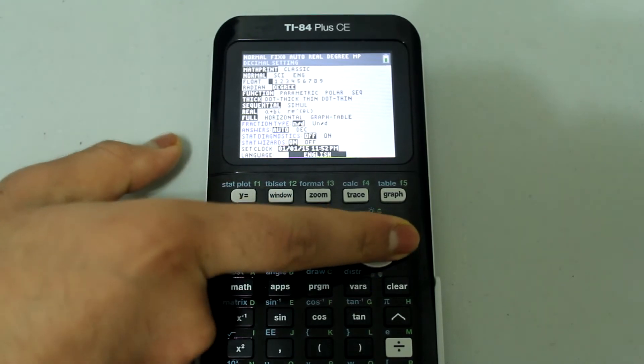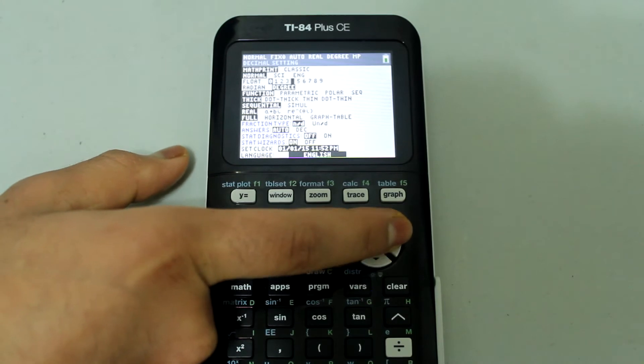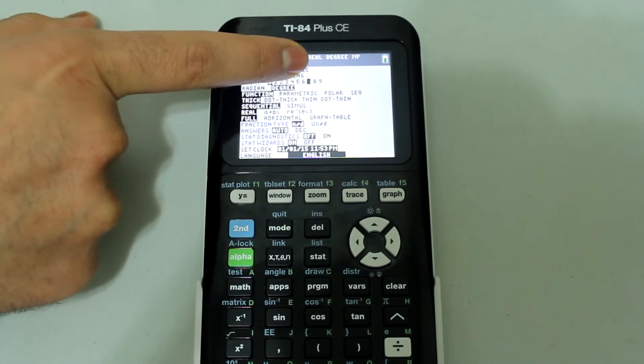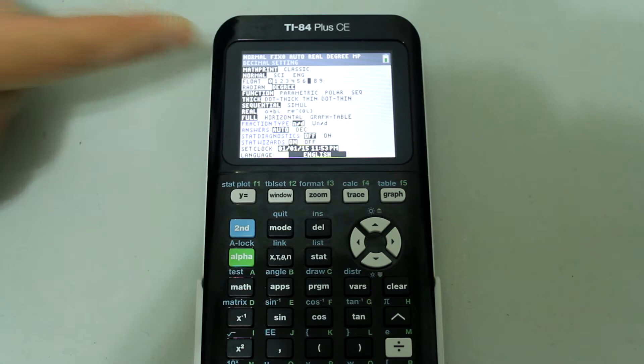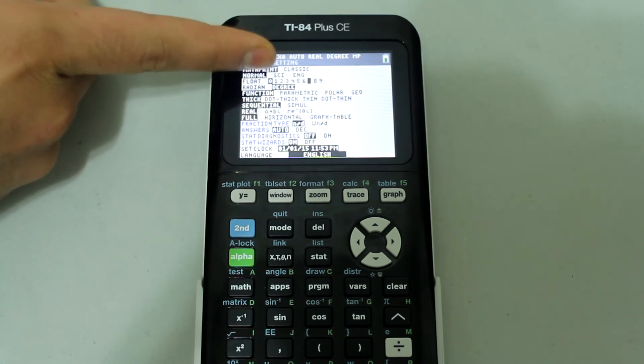If for example I chose 7, then there would be 7 decimal places to each of my answers. Right now, since it's set at 0, there's no decimal places.